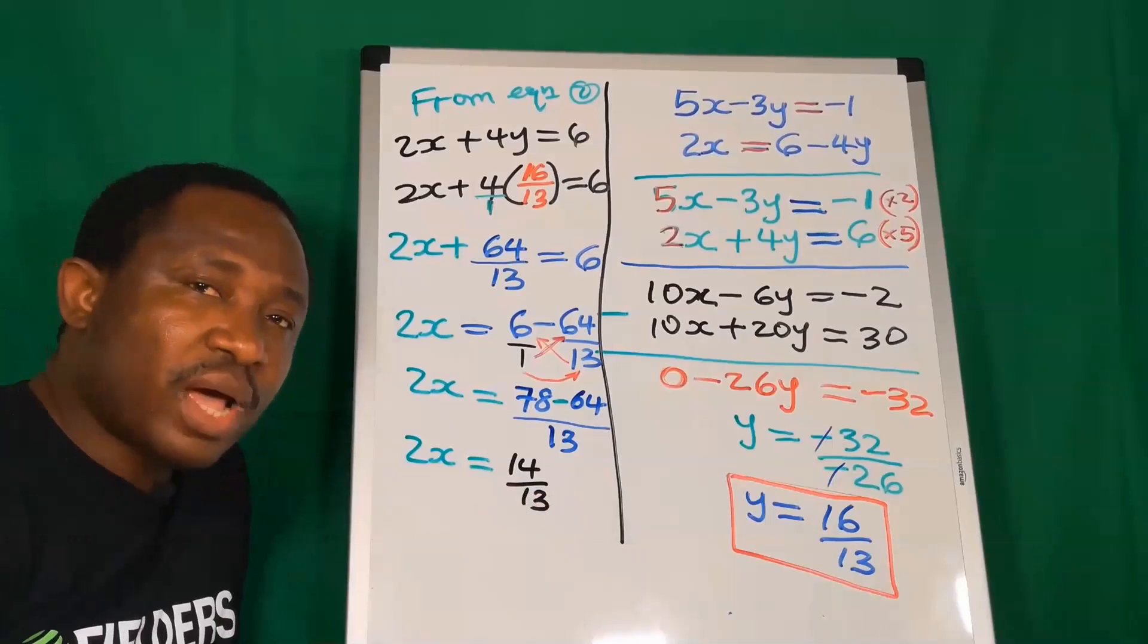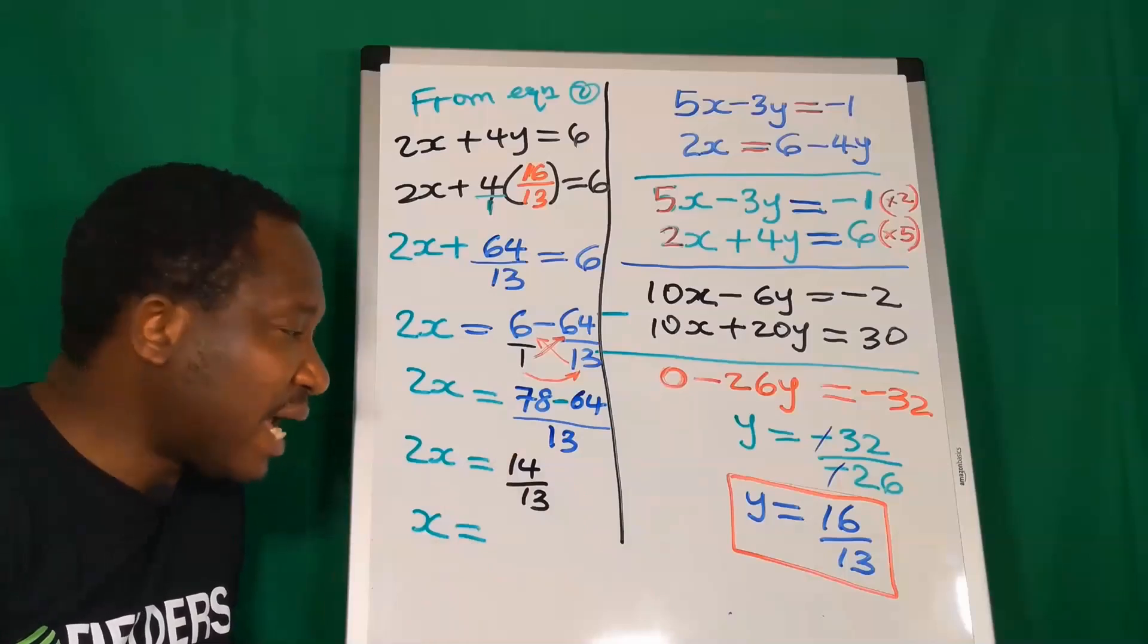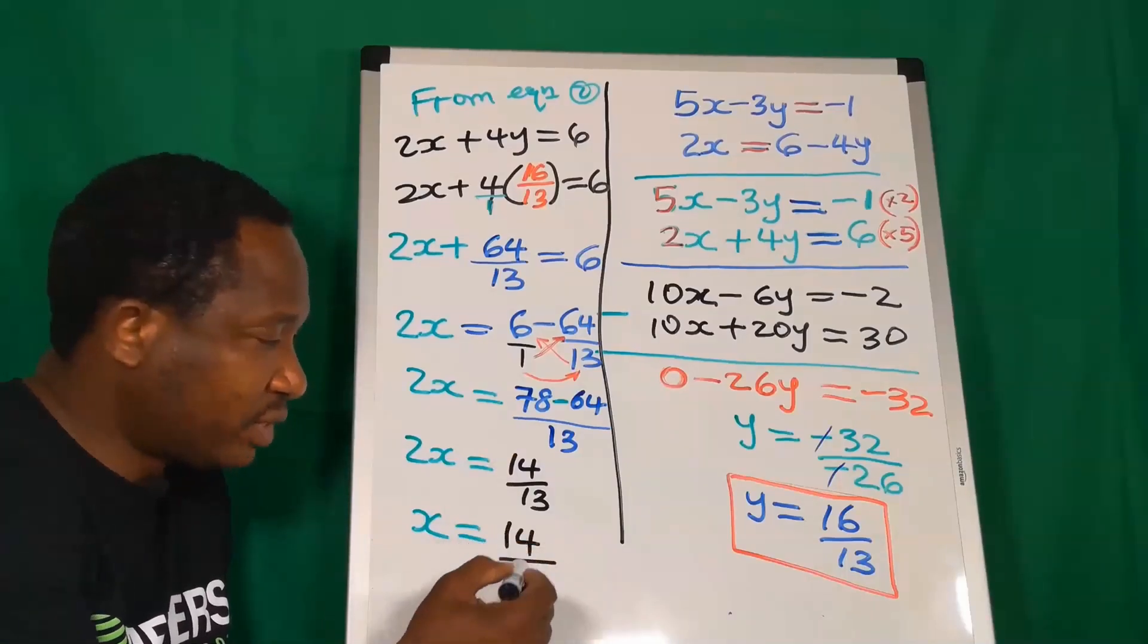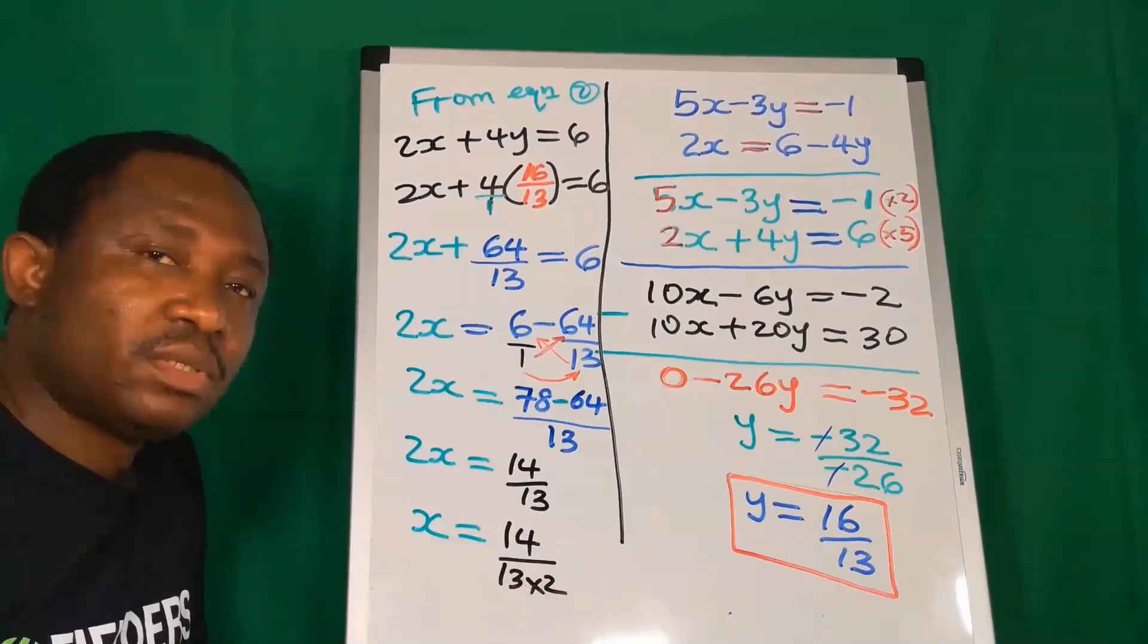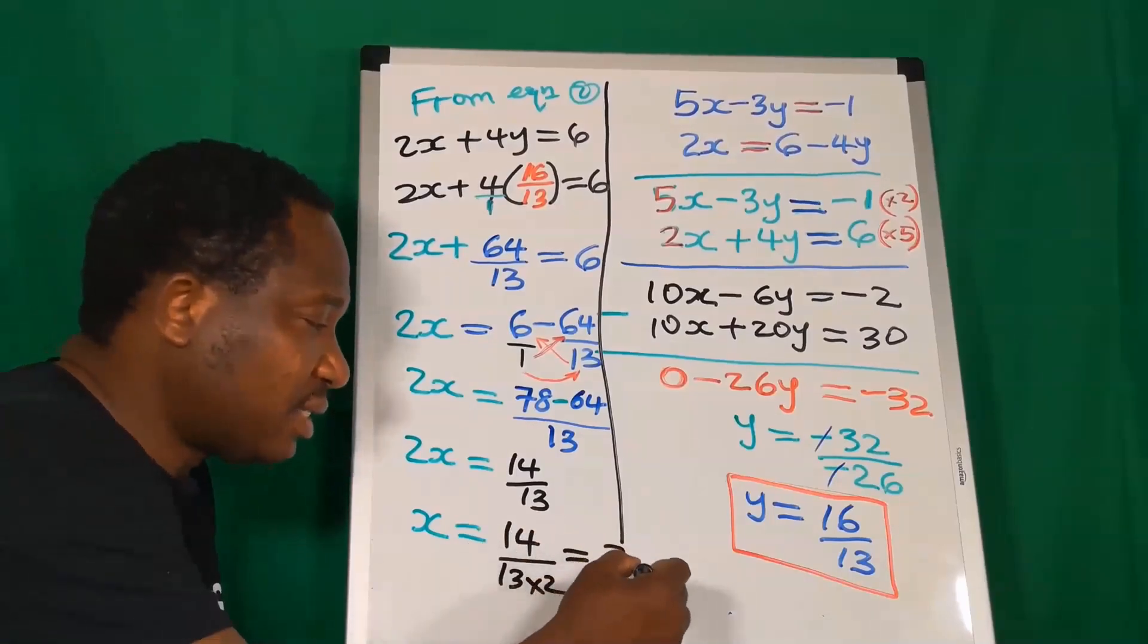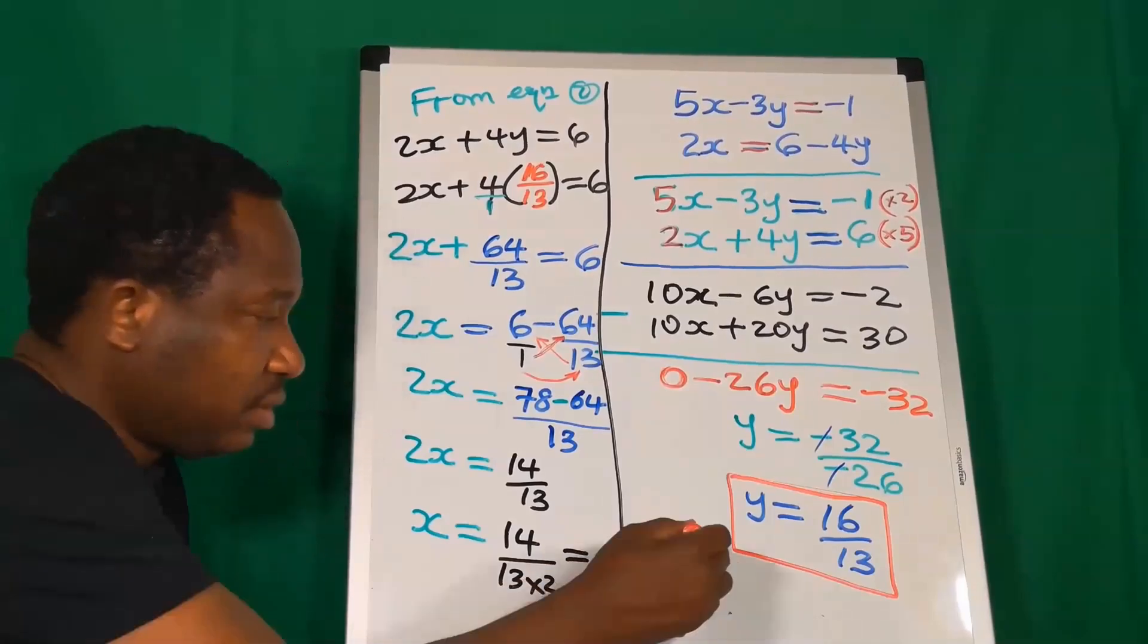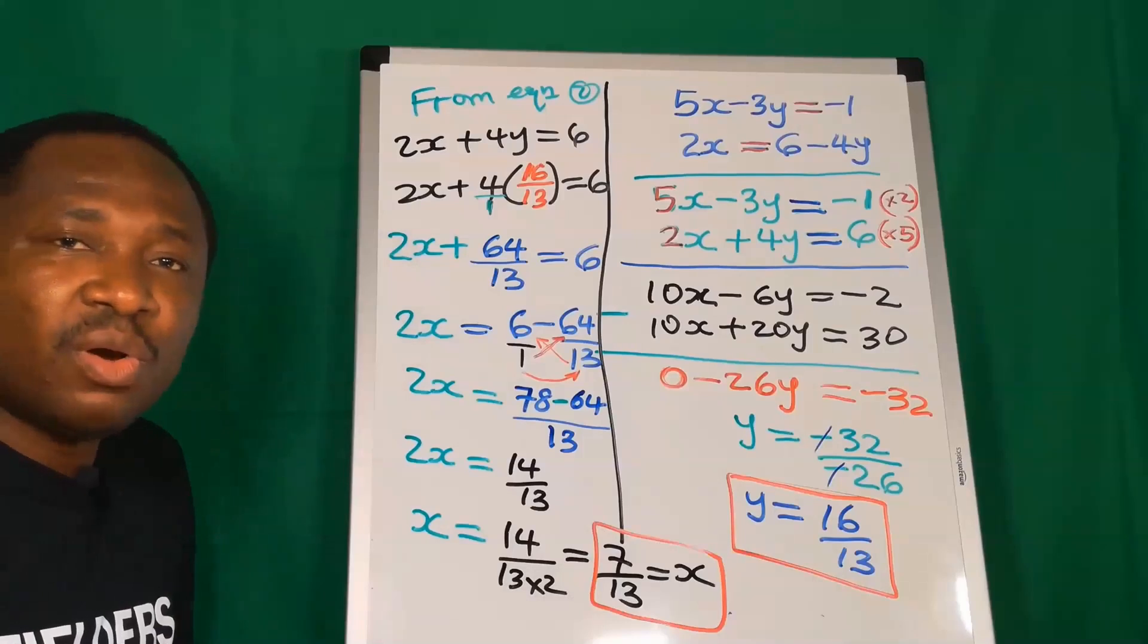I want to isolate x. 2 is multiplying. On the other side, 2 will divide. And you're going to have 14 over 13 multiplied by 2. And the final answer here is 7 over 13, which is our x. You can see that x is 7 over 13.